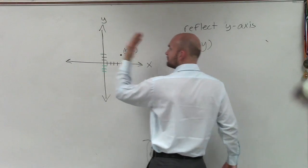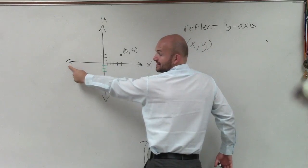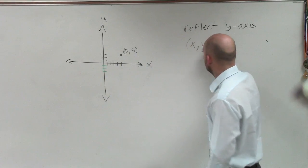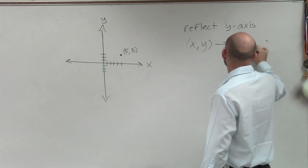But if I'm going to take this point and reflect it over the y-axis, now I'm going to be on the left side of the y-axis. Therefore, the x-coordinates are now negative. So x comma y is now going to be negative x comma y.